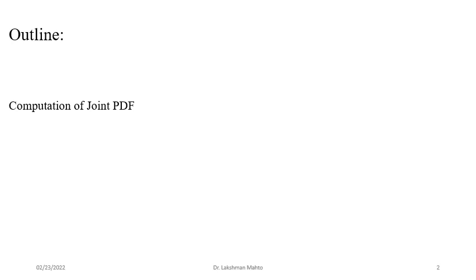The outline of today's lecture: first, computation of joint PDF; then, given joint PDF, how to compute marginal PDF and conditional PDF. We will also look at Bayes rule. Bayes rule appears everywhere — whether you are talking about two events, discrete distributions, or continuous distributions — because it deals with conditional distribution and the multiplication rule.